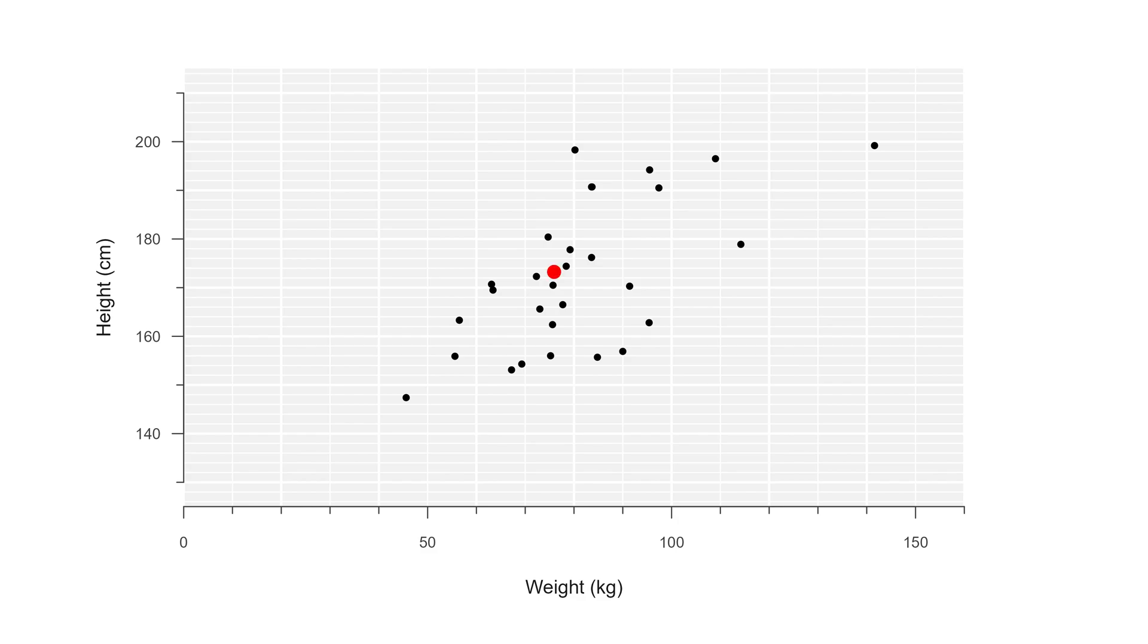For example, this person weighs 76 kilos and is 173 centimeters. A simple linear model is defined by two parameters: the intercept, which is where the line should start, and the slope, which is the direction of the line.